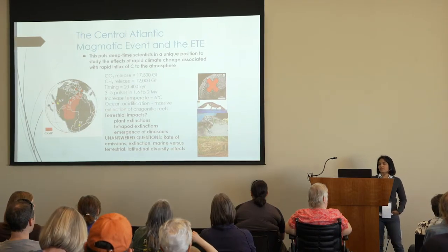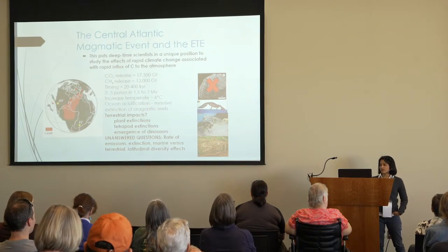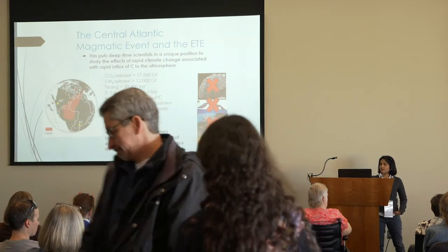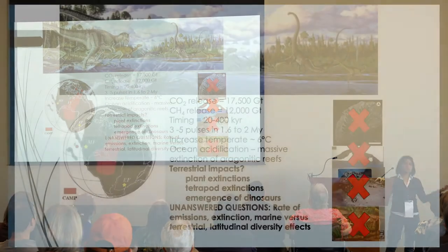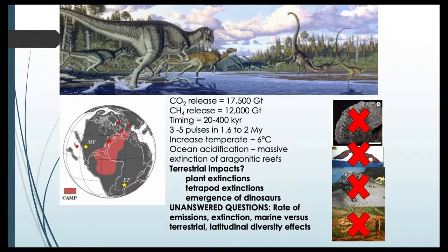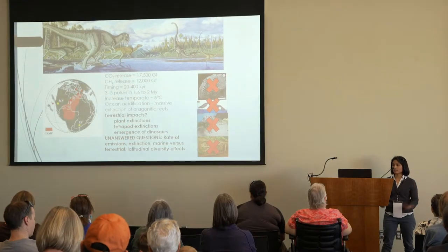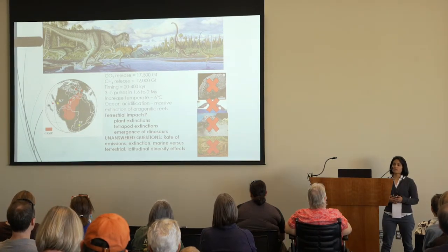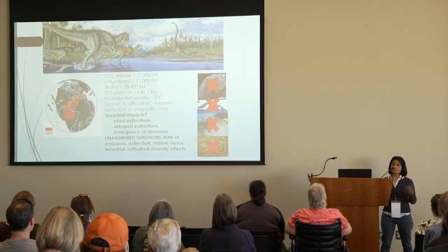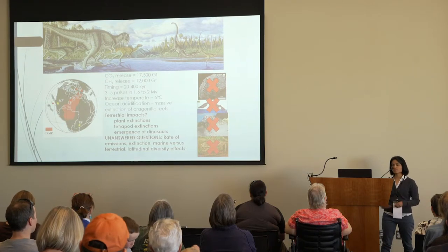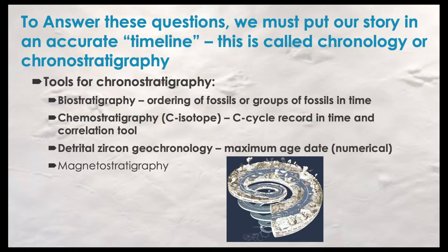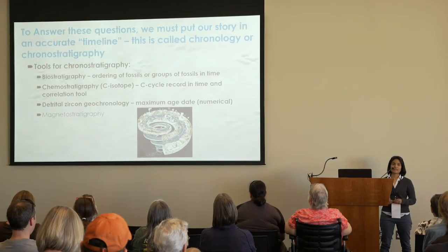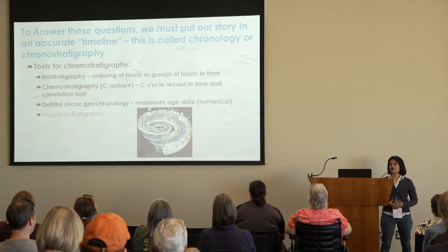The end-Triassic extinction basically wiped out various types of plants, especially those with big leaves, and knocked out a bunch of tetrapods like phytosaurs and rauisuchians. Dinosaurs had evolved and were around, but they weren't major components of the ecosystem — so this opened the door for dinosaurs to take over as one of the most dominant tetrapod clades in Earth's history. Unanswered questions include the rates of CO2 and methane eruption, the difference between marine and continental extinction records, and latitudinal effects. To answer these, we need an accurate timeline — a chronostratigraphy.